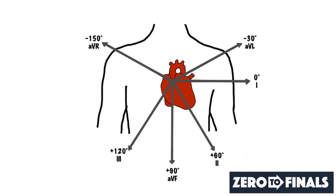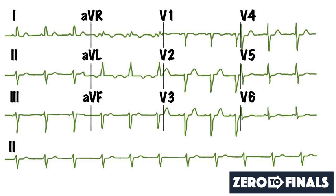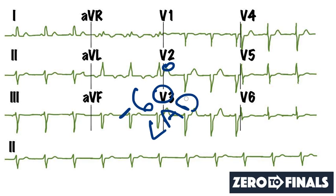Going back to our diagram, AVR is isoelectric, which means the axis is at exactly 90 degrees to that lead. Since we said there was a left axis deviation, the axis must be going in exactly that direction — 90 degrees from AVR. If we add 90 degrees onto the position of AVR at minus 150 degrees, we get minus 60 degrees. So the axis of this ECG is minus 60 degrees, confirming a left axis deviation.